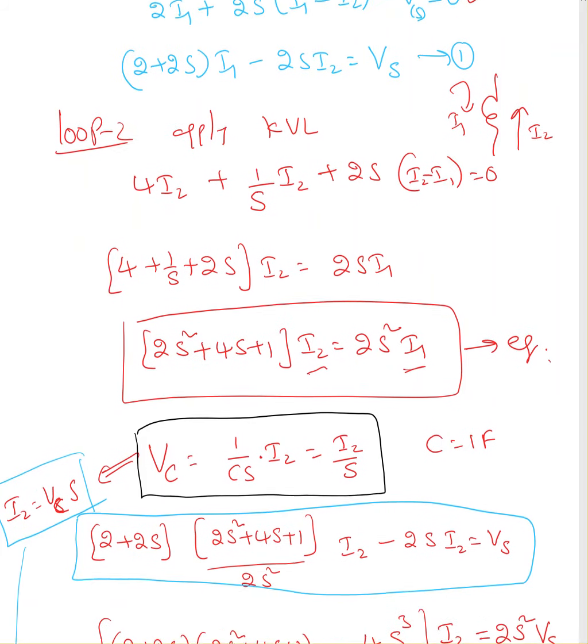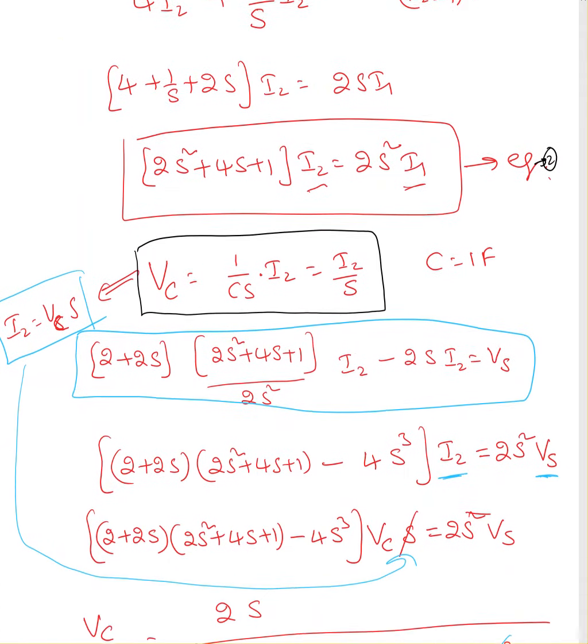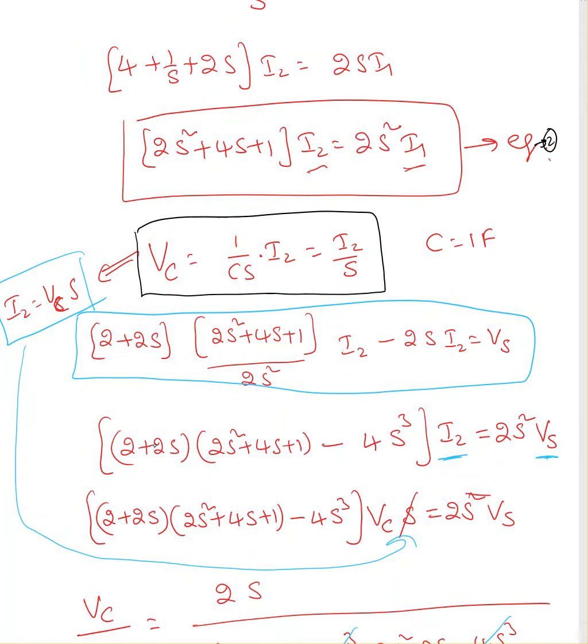Now, I'm substituting equation 2, which is loop 2 equation, in equation 1, which is loop 1 equation. So that's what I did here. After solving that, I end up with the relation between I2 and Vs, source voltage and the current in loop 2.